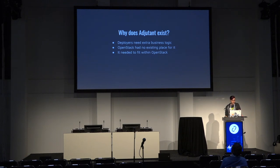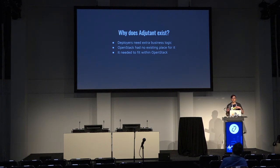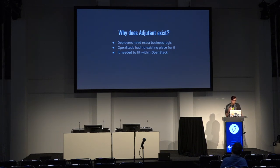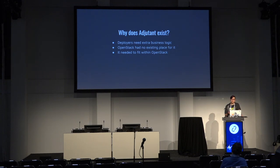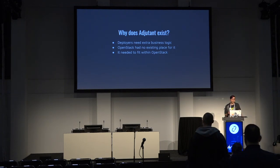So why does Adjutant exist? OpenStack is a powerful collection of services that offer a lot of really good tools when it comes to flexibility in regards to infrastructure as a service. But for a lot of public clouds, to manage your users and their details, you need a lot more than what is offered in OpenStack itself. You're normally storing information in other systems and you need custom business logic requirements that just don't really fit anywhere within OpenStack itself.